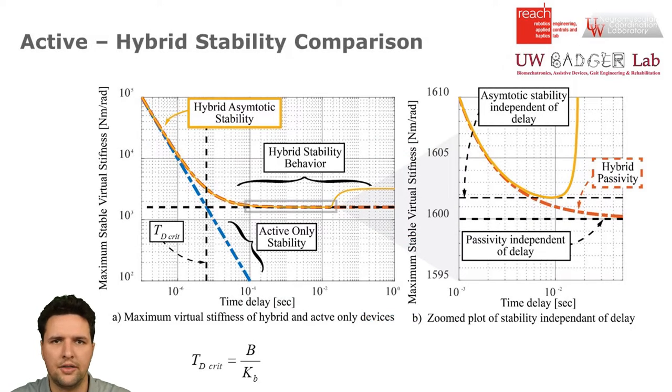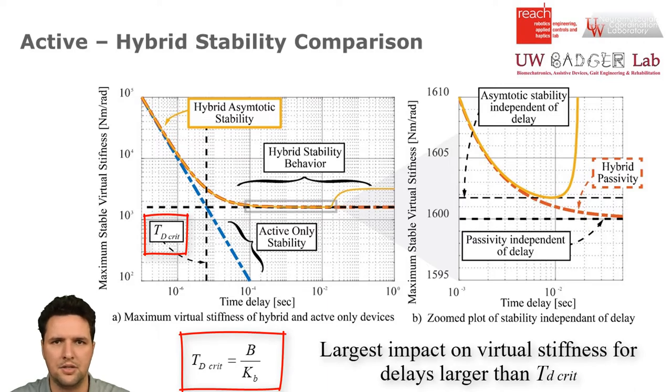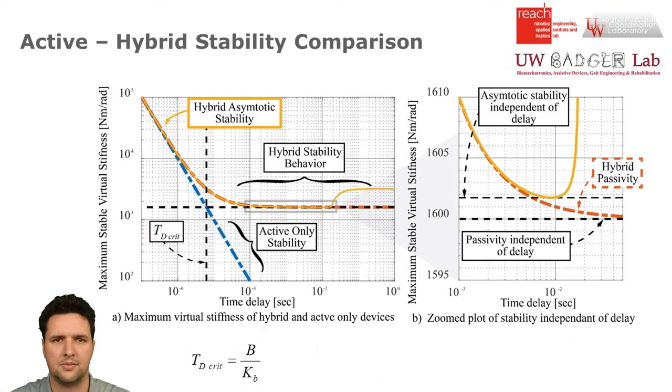Stability results show that the hybrid actuator outperforms an active actuator, especially at larger time delays. Reforming the passivity expression reveals the ratio of damping to brake stiffness as an important factor determining the range of delays where our hybrid actuator is most effective at increasing a device's maximum stable stiffness.